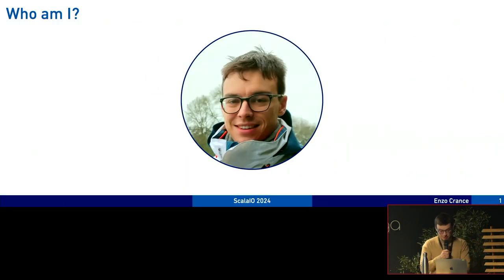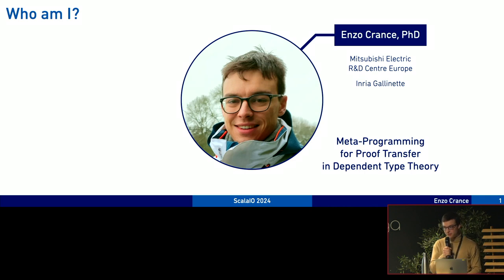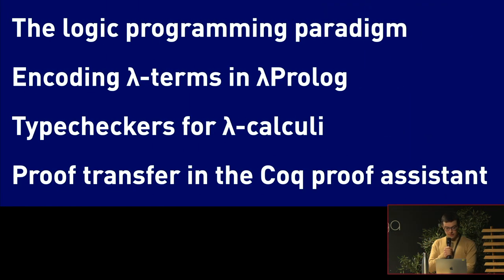So first who am I? I'm a fresh PhD graduate from Inria Galinet and I did my PhD with Mitsubishi Electric in Rennes about metaprogramming for proof transfer in dependent type theory. I won't be talking about dependent types this early in the morning don't worry and I worked mainly on the proof assistant Coq with the Coq LP meta-language which is a logic programming language. So I will talk about the logic programming paradigm first, then how to encode terms in a functional language with lambda prolog, then I will build a type checker for lambda calculus and I will end by talking about proof transfer and the Coq proof assistant.